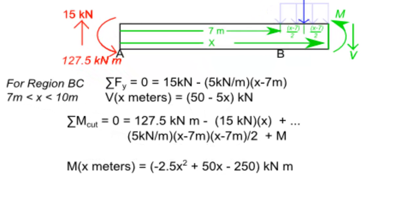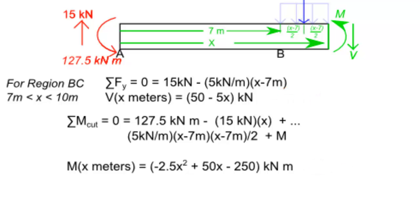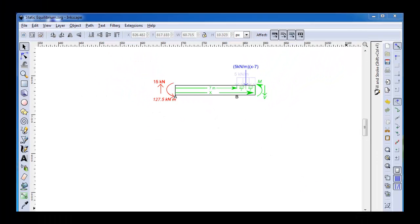So in this region, shear force will vary linearly with x, and the moment will actually follow the curve of a second order polynomial. Now that region BC has been analyzed, we know the shear force and moment at every single point within beam AC.